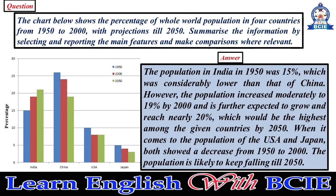When it comes to the population of the USA and Japan, both showed a decrease from 1950 to 2000. The population is likely to keep falling till 2050.